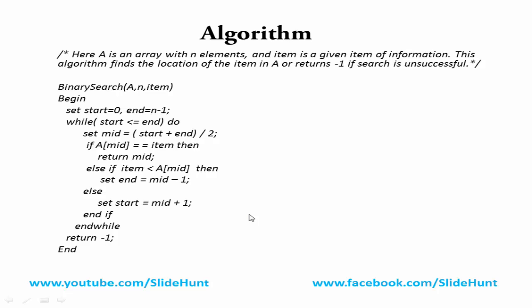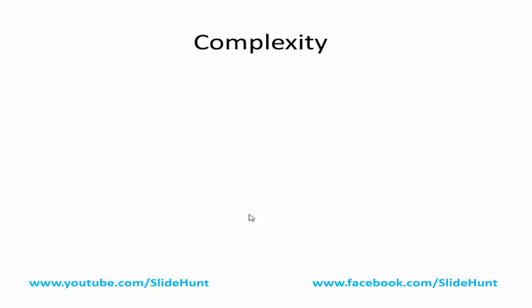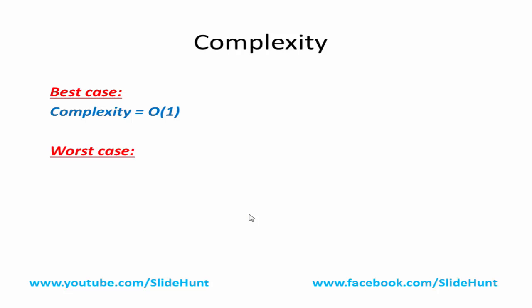Next, we learn how to calculate the complexity, measured by the number of comparisons to locate the item in array A. In the best case, the item is present in the middle of the array and we need only one comparison, so best case complexity is O(1). In the worst case, we continue reducing the search base until it has only one element. If the array has N elements, N is reduced to N/2, then N/4, then N/8, and so on. If we need K steps to reduce from N to 1, then N / 2^K = 1, which gives K = log₂(N). So the worst case complexity is O(log N).